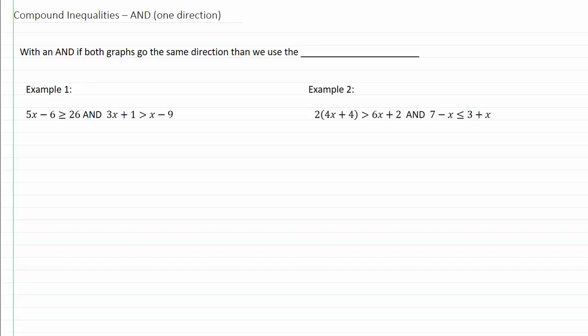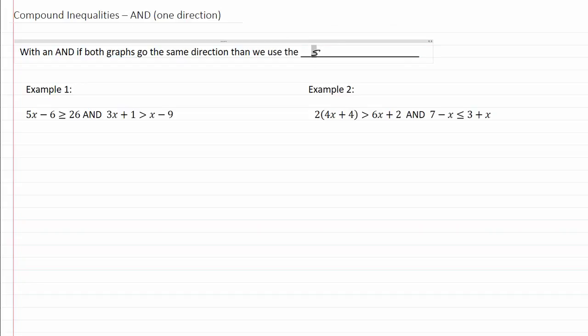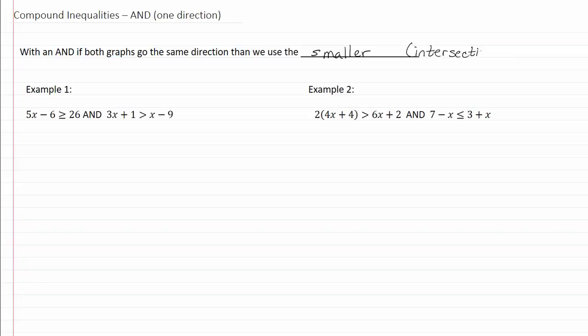Compound inequalities in one direction. With an 'and', if both graphs go the same direction, then we use the smaller, or you can think of it as being the intersection or overlap.